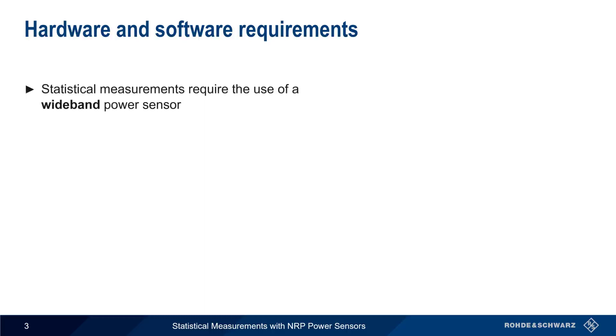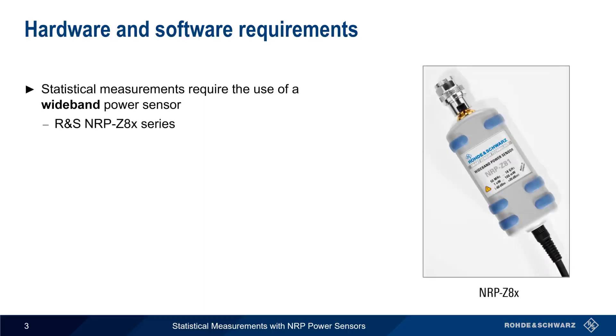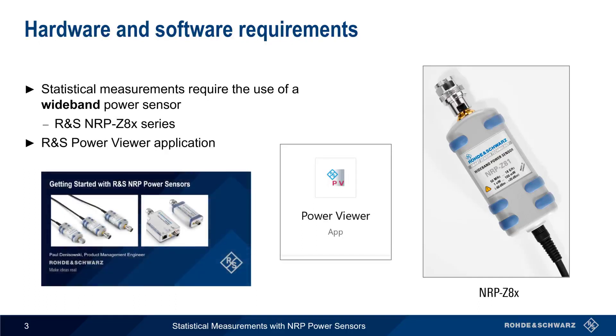Statistical measurements require the use of so-called Wideband Power Sensors, such as NRP-Z8X series sensors. In this presentation, we'll be configuring the sensor and collecting statistics using the PowerViewer software application. If you're unsure about how to install or use PowerViewer, step-by-step instructions can be found in the presentation Getting Started with Rohde & Schwarz NRP Power Sensors.